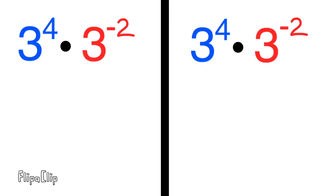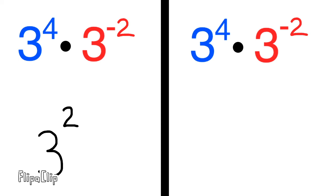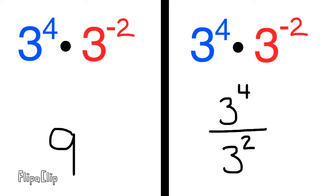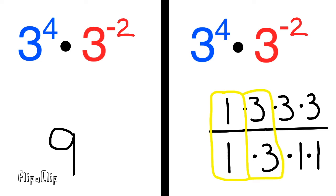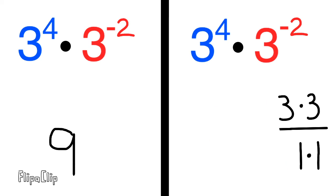Now let's do three to the power of four times three to the power of negative two. The base number is the same, and four plus a negative two, or four minus two, is two. Three to the power of two is three times three, which is nine. On the right-hand side, the term with the positive exponent goes on top and the term with the negative exponent moves to the bottom with the exponent changed to a positive. That gives us three to the power of four over three to the power of two, which is the same as three times three times three times three over three times three. Three divided by three is one, and three divided by three is one — these cancel out, leaving three times three over one, which is three to the power of two, or nine.